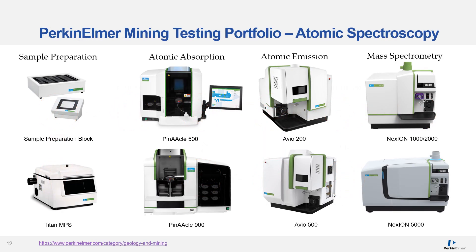PerkinElmer has a complete portfolio of atomic spectroscopy testing equipment and sample preparation solutions. On the left side of the slide, we can see our sample preparation block and Titan microwave preparation system. In the middle, we have our atomic absorption spectrometry product lines — the Pinnacle 500 and the Pinnacle 900. Then we have our atomic emission spectrometry, the AVU-200 and the AVU-500. We also have our ICP-MS product line on the right-hand side — the NexION 1000 or 2000, and the newly released NexION 5000.